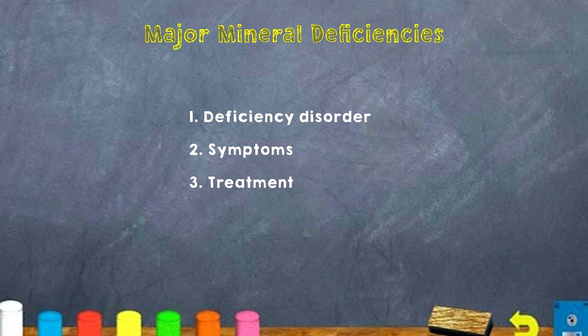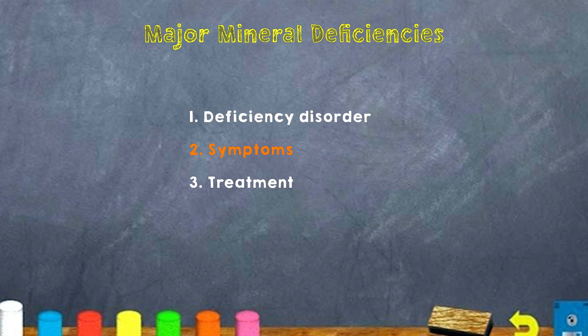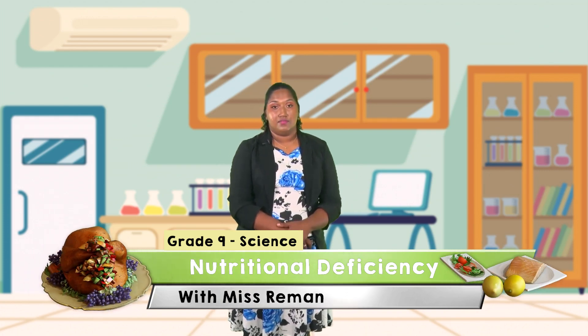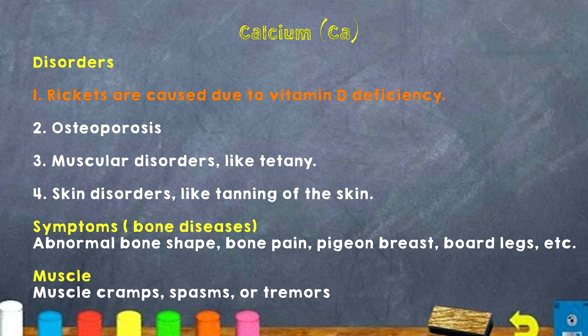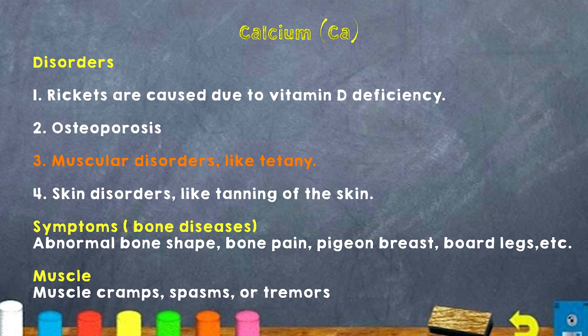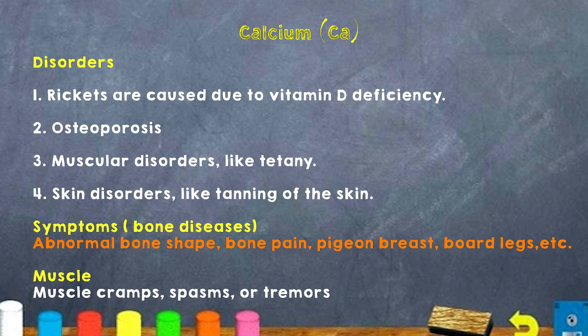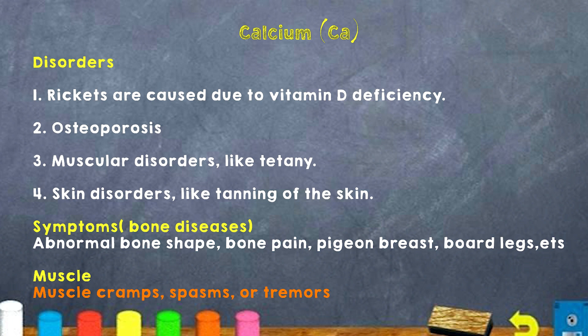Major mineral deficiency information is organized by deficiency disorder, symptoms, and treatment. First, we look at calcium. Disorders associated with calcium deficiency include rickets, caused by a lack of calcium or vitamin D; osteoporosis; muscular disorders; and skin disorders like darkening of the skin. Symptoms include bone disease, abnormal bone shape, bone pain, pigeon breast and bowed legs, as well as muscle cramps, spasms or tremors.